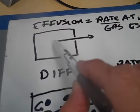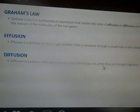Effusion basically means the rate at which a gas escapes through a hole. Diffusion is basically the rate at which the gases mix together. Those are the two definitions, and these are governed by Graham's Law.